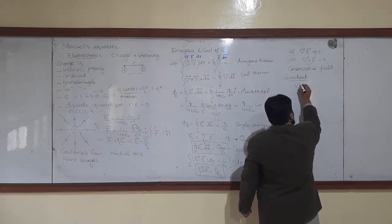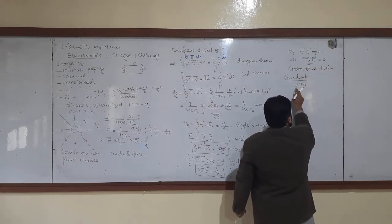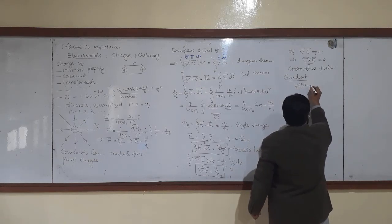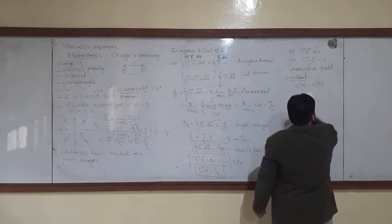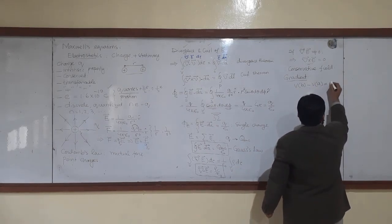The fundamental theorem of the gradient states that the integral from A to B gives V_B minus V_A — the difference in electric potential between the two points.